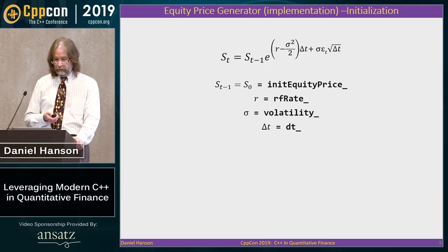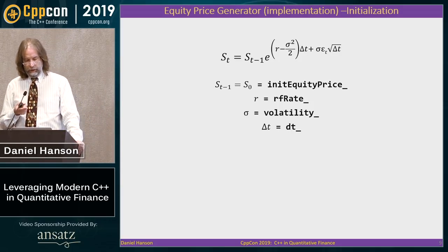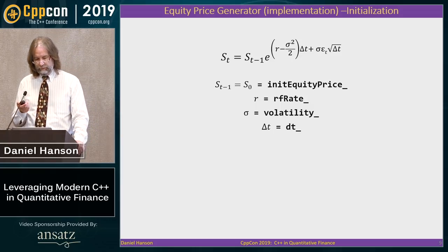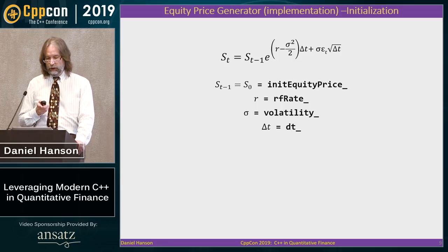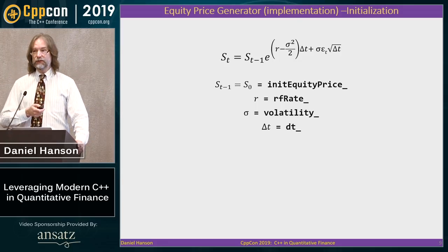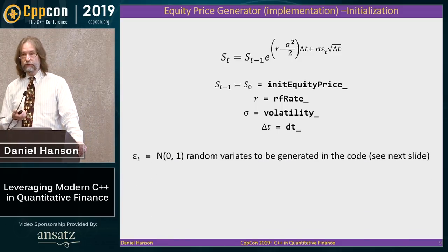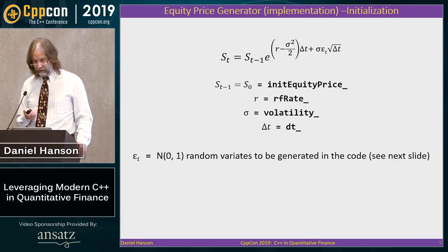We're going to write a class called equity price generator. Most of these variables — current stock price, drift, volatility, time steps — we take in at construction and store as member variables. Volatility is the standard deviation of movements in the stock price. The one key term is epsilon sub T, which drives the randomness: it's a draw from a standard normal distribution.